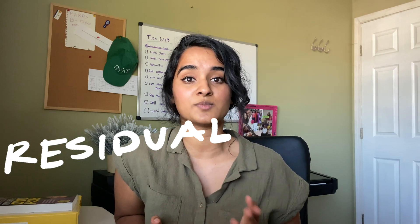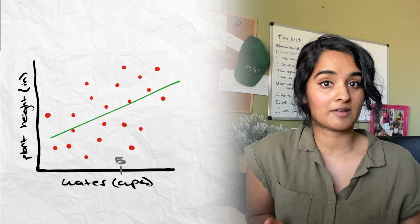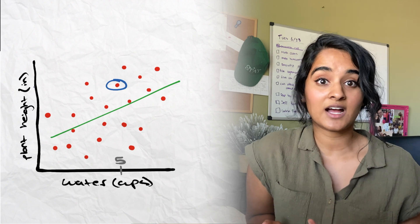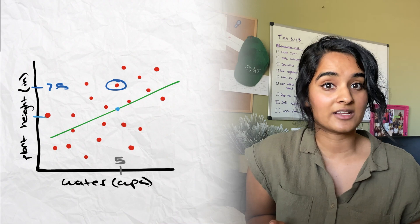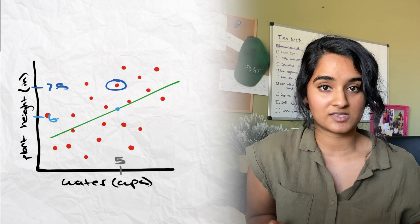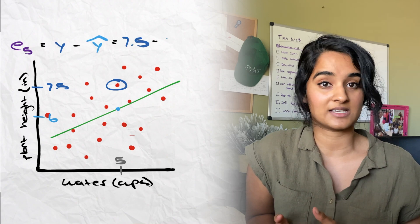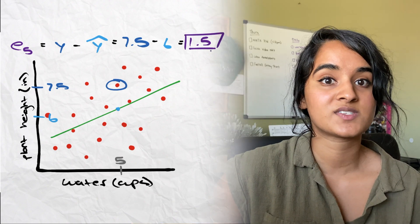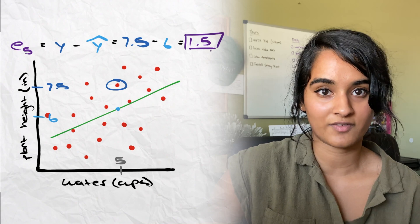What's a residual? A residual is going to be the difference between your observed value and your predicted value. So let's say we're trying to predict the height of a plant when it was given five cups of water. Based on our data, our observed height was 7.5 inches, but based on our line of best fit, the predicted value was six inches. So we take the observed value, 7.5, and subtract off the predicted value, 6, and we end up with a residual of 1.5. In statistical terms, a residual is noted as e, so the residual for five cups of water is 1.5.